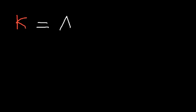In this video, we're going to go over the Arrhenius equation, where k, or the rate constant k, is equal to A times e raised to the negative Ea divided by RT.